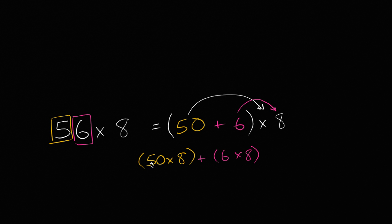And 50 times 8, well, 5 times 8 is 40, but we're not just saying 5, we're saying 5 tens, so 5 tens times 8 is going to be 40 tens, or it's going to be 400. Another way to think about it, 5 times 8 is 40, but we're not talking about 5, we're talking about 5 tens, so it's going to be 40 tens, so 50 times 8 is 400, and then 6 times 8 is, of course, equal to 48. So this is going to be equal to 400 and 48.